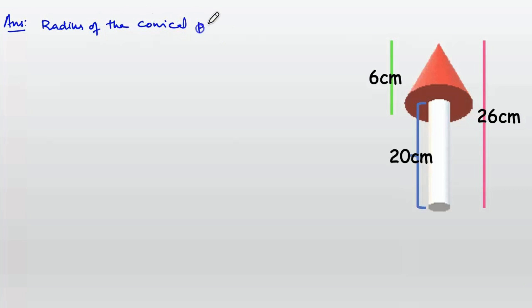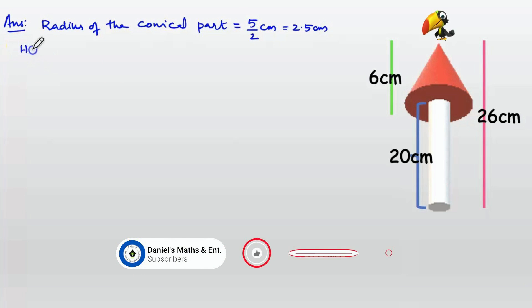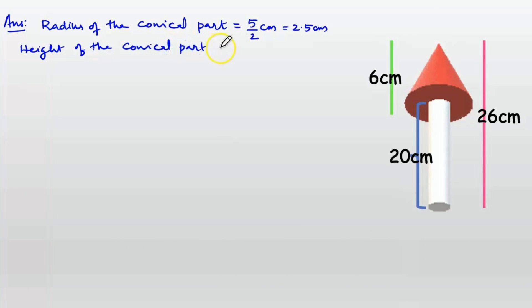Radius of the conical part equals 5/2 cm equals 2.5 cm. So radius of cone r equals 2.5 cm and h equals 6 cm.